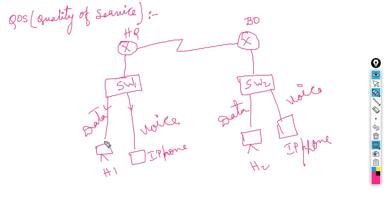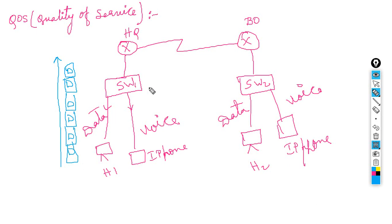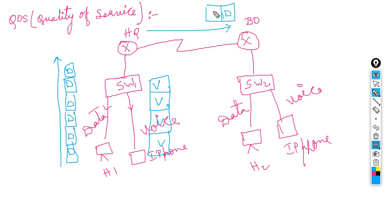Whenever they are sending traffic, it will go in this direction. The PC is sending data traffic — data, data, data — and the IP phone is sending voice traffic. We did not configure any Quality of Service on any router, so whatever traffic is coming just goes from head office to branch office: data packet, voice packet, data packet, voice packet — with no priority. We did not put any priority here.